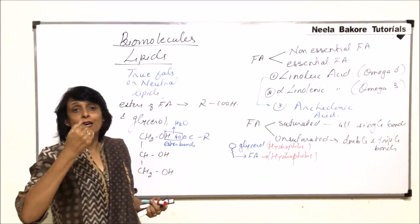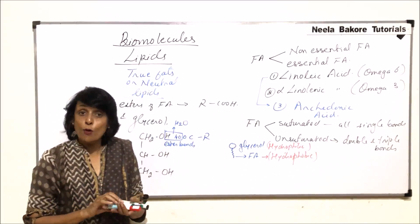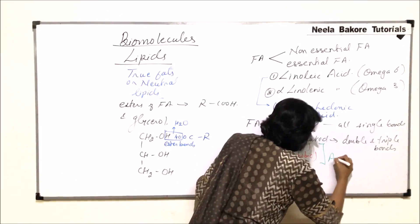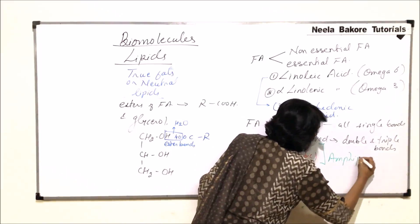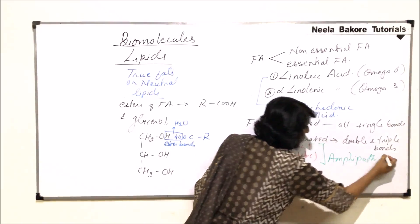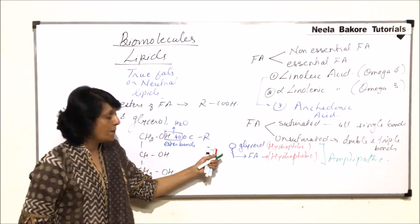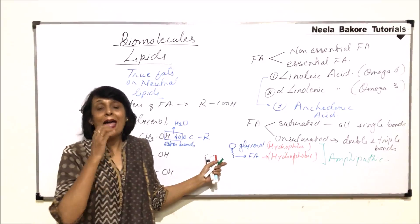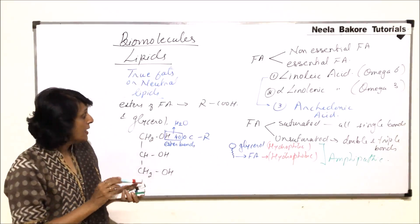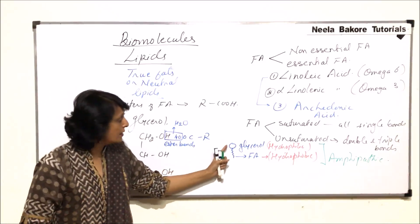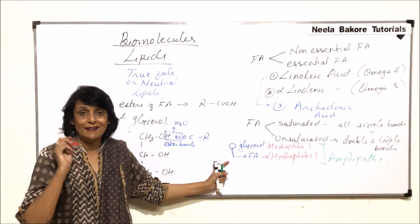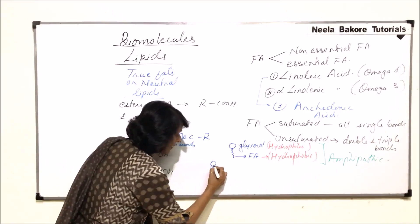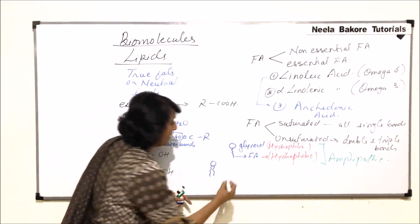Glycerol is hydrophilic, whereas the fatty acid tail is hydrophobic. When one molecule has one end hydrophilic and another end hydrophobic, such molecules are termed amphipathic. So lipid or fat molecules are actually amphipathic molecules.